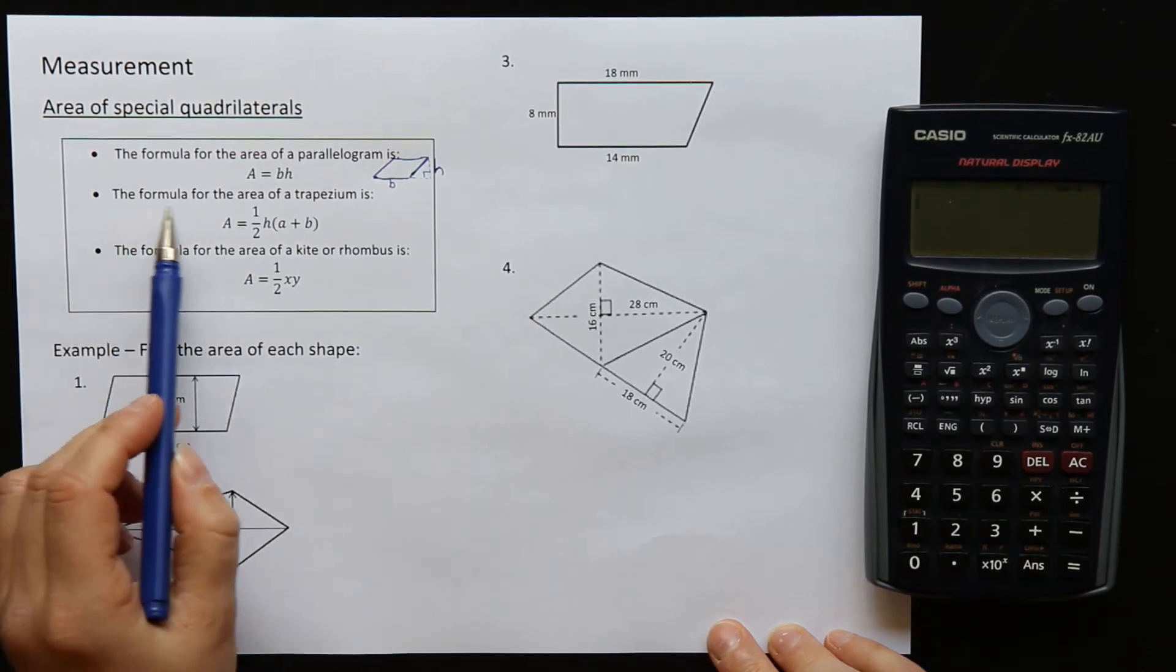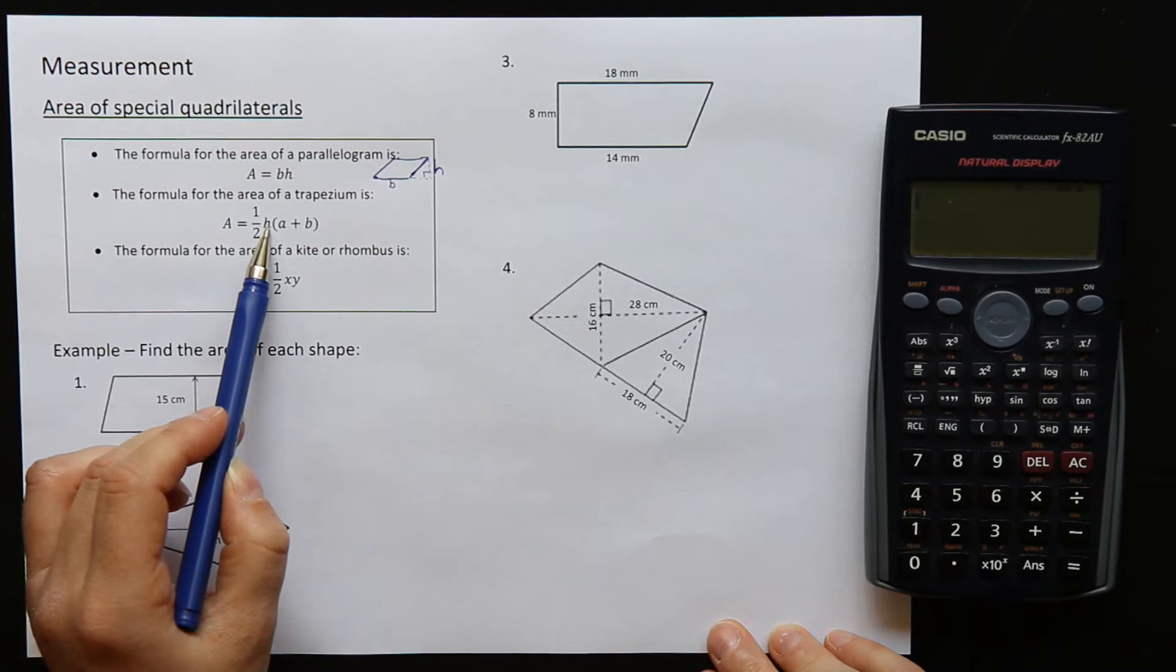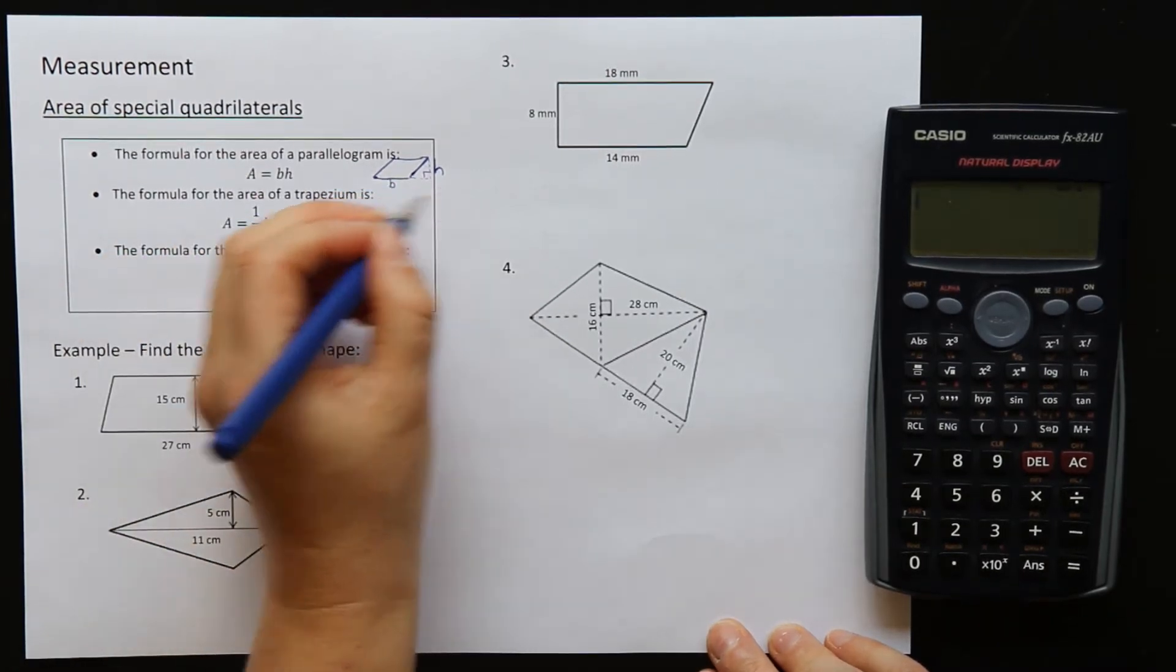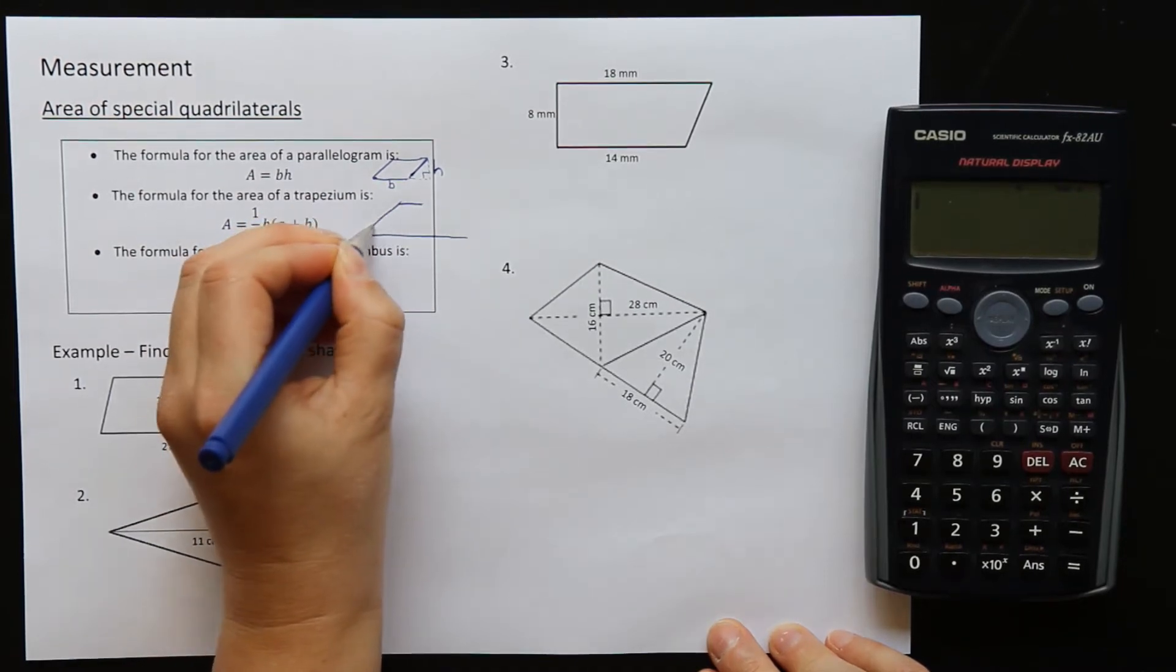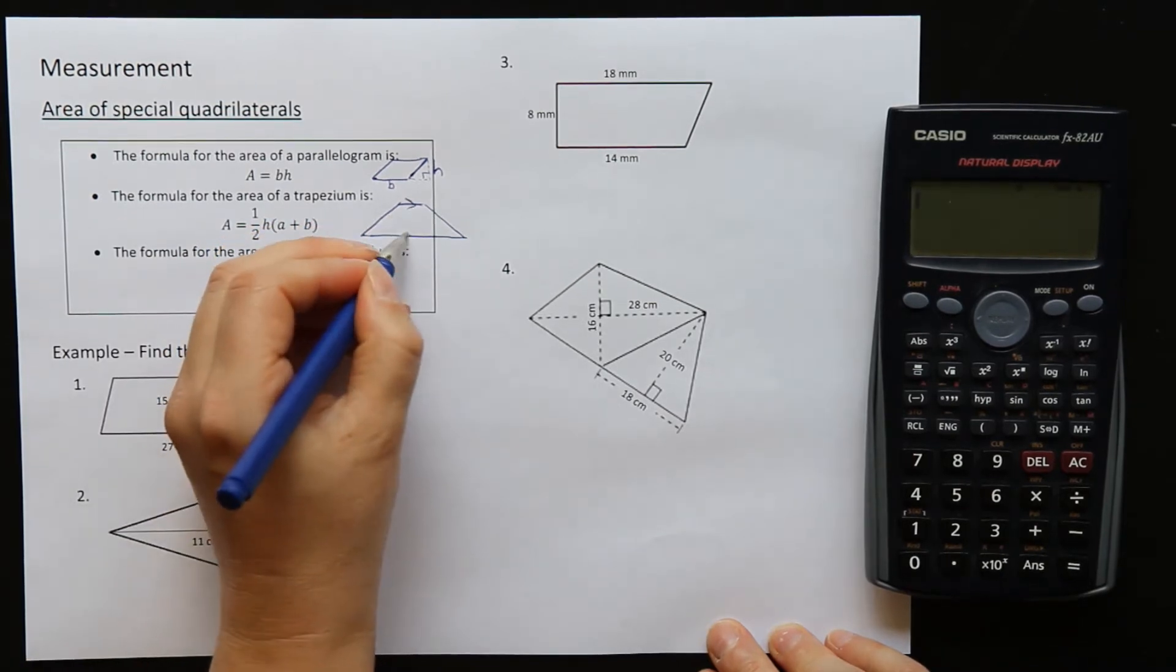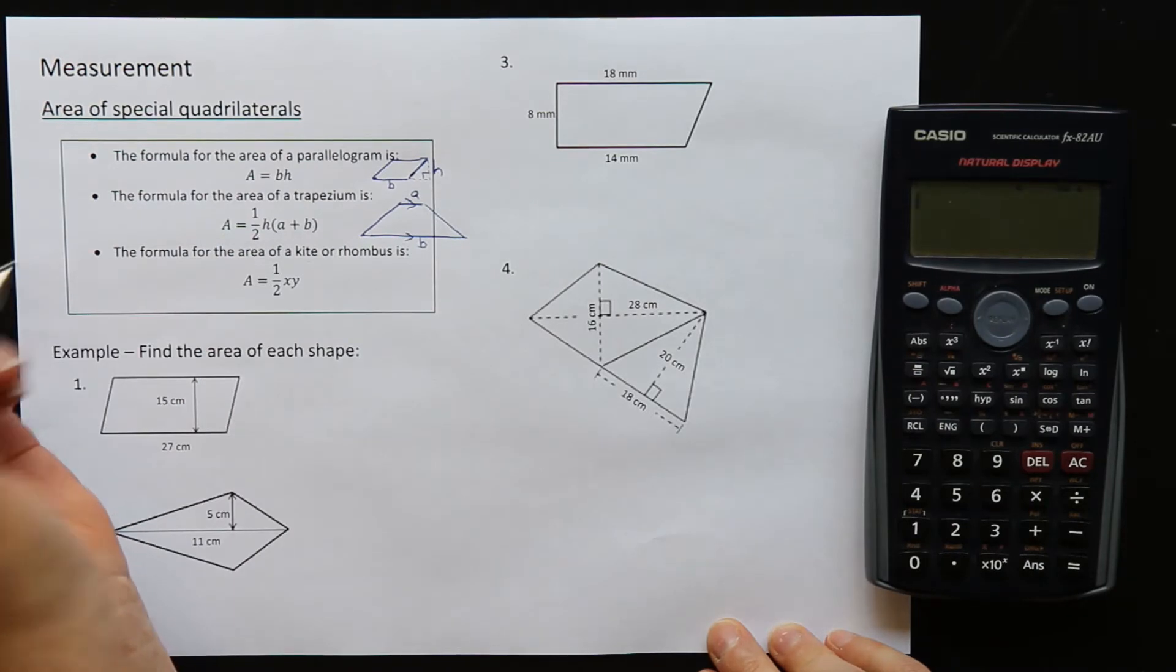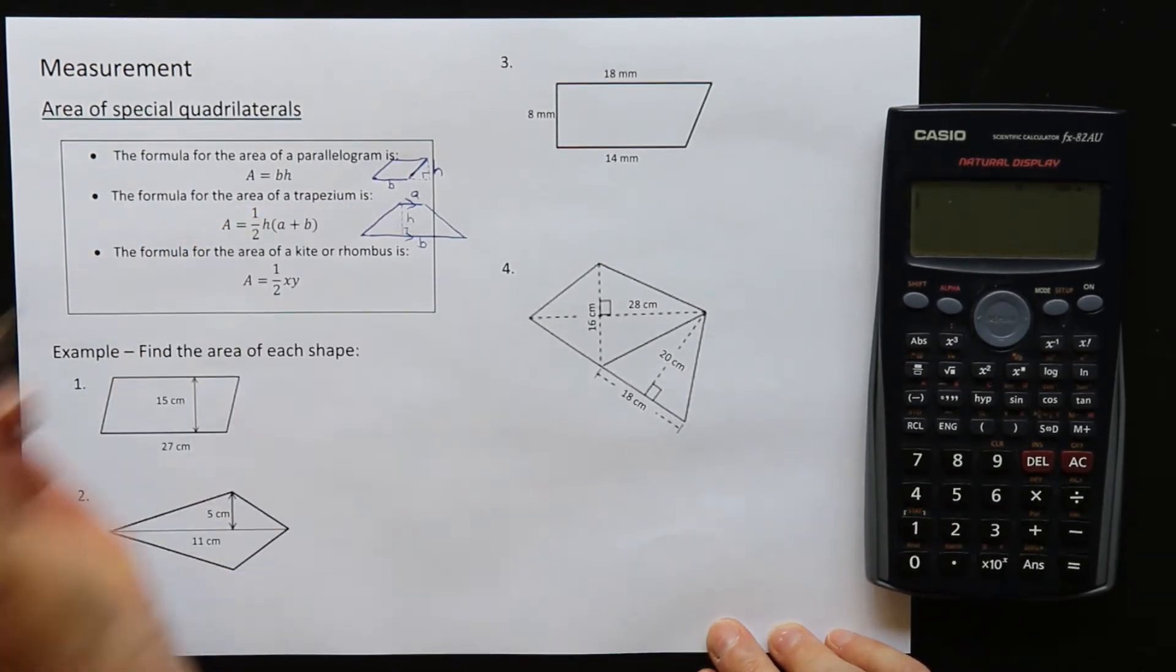Okay, we're also going to look at the trapezium. The formula for a trapezium is half height bracket A plus B. If I draw a trapezium, here is a typical trapezium with the parallel sides there. The A and the B are the two parallel ones, doesn't matter which one's which, and the height is the perpendicular height between them.